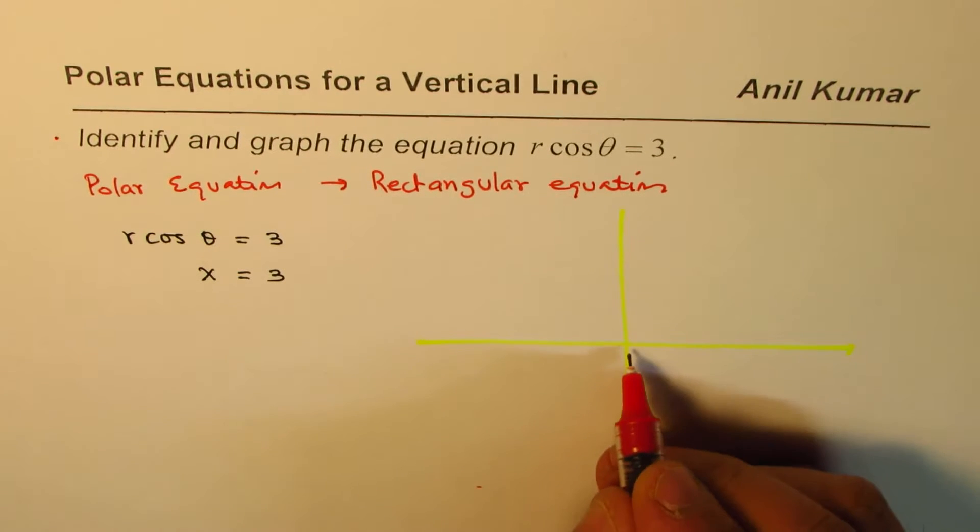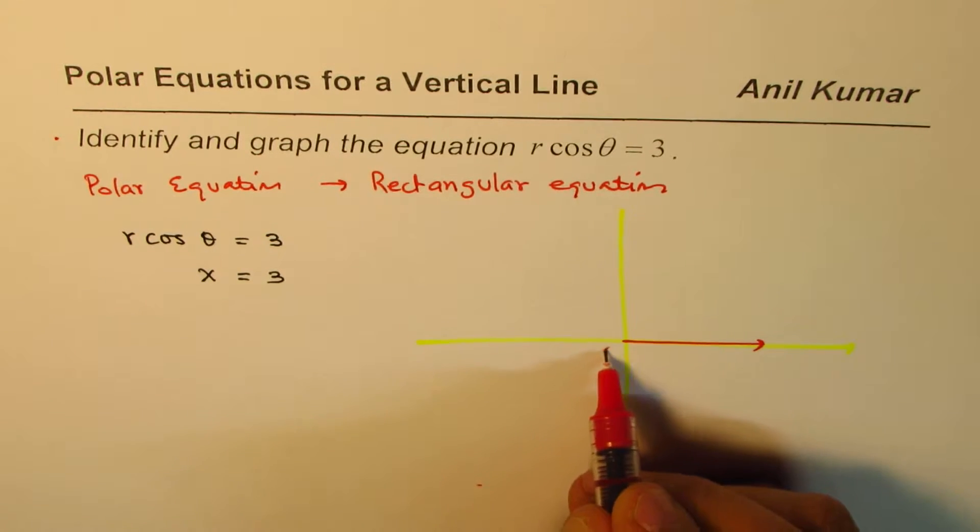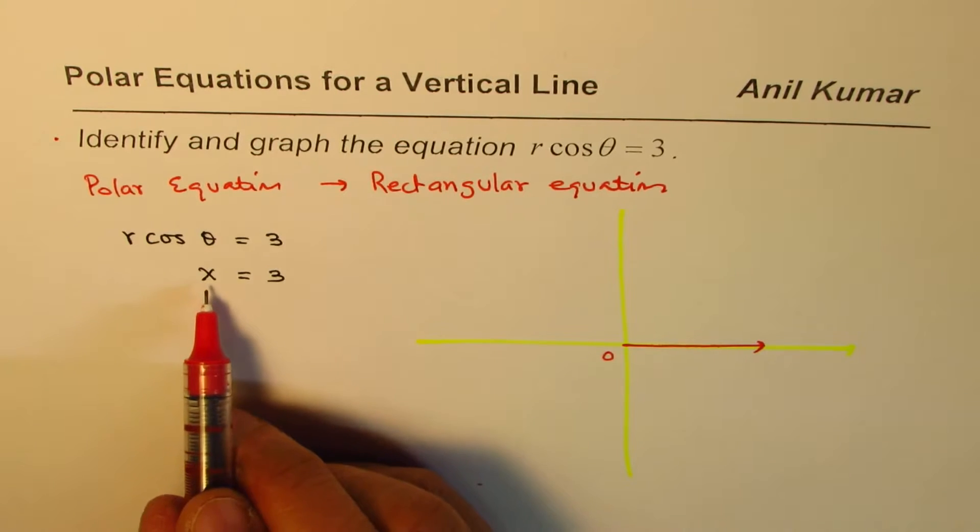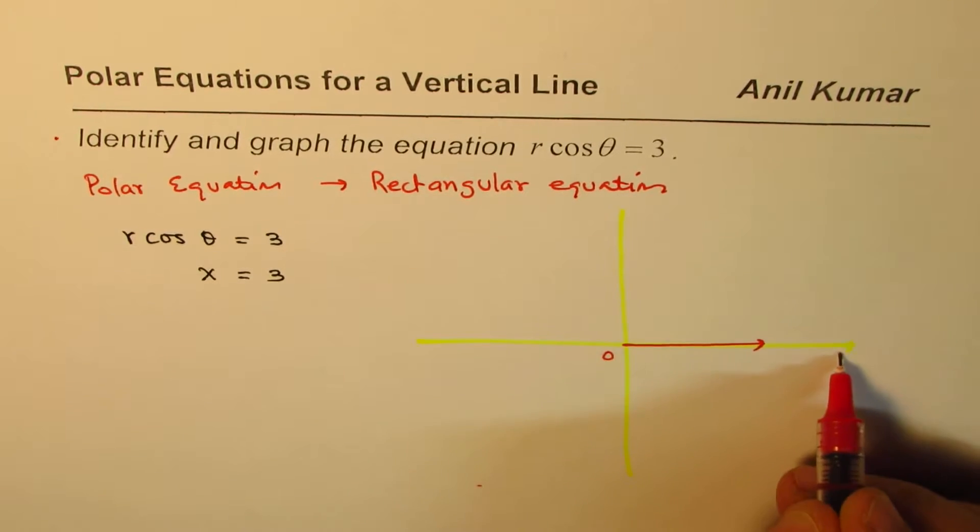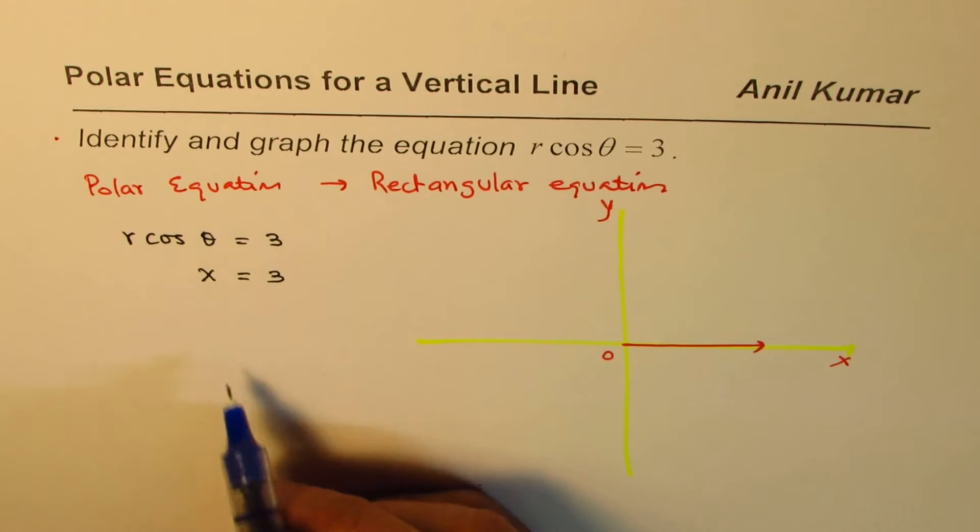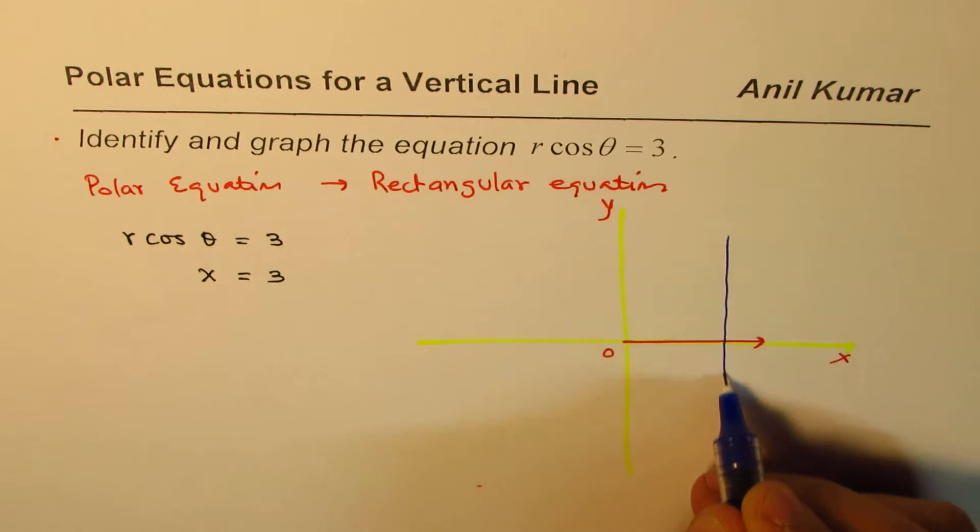So if we superimpose it on the polar plane, where this is the pole, let's say origin O, that is the polar axis, then x equals 3. So on Cartesian plane, these points will be x and y. x equals 3 will be from origin 3 units away. So let's say this line,